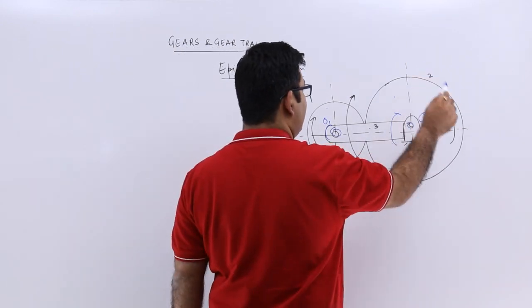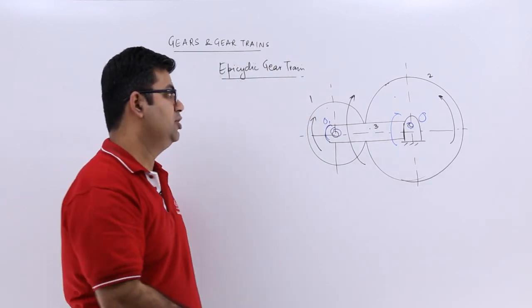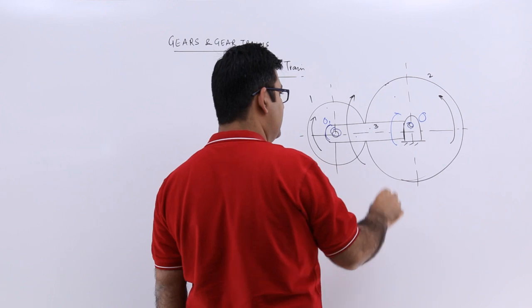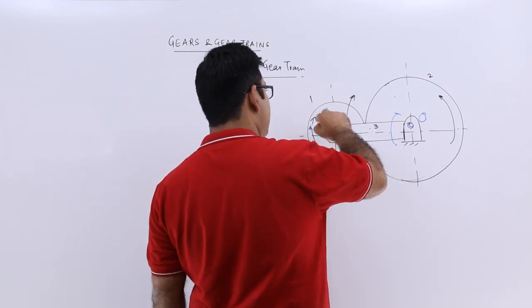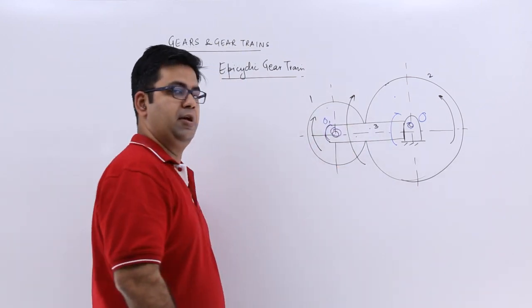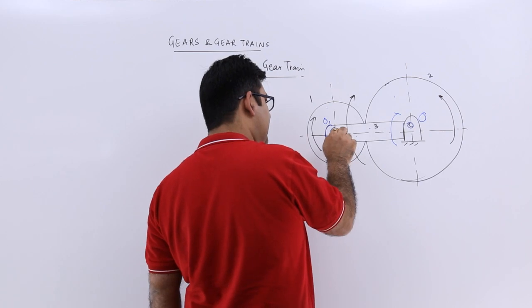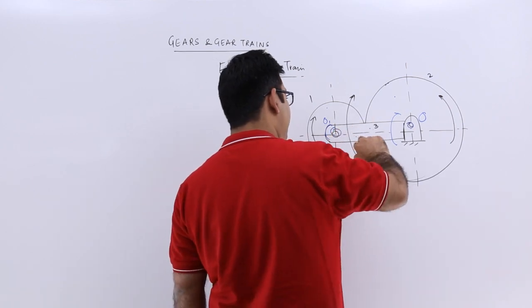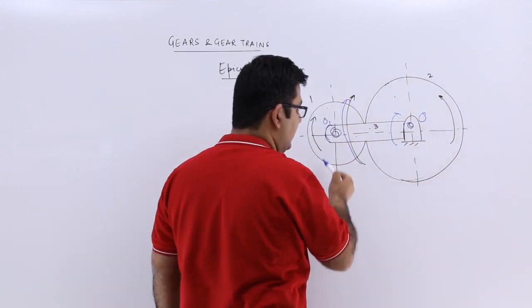Next, if I make gear 2 fixed, means gear 2 cannot rotate even. So I will have to give drive to this arm. So when I give drive to the arm, this entire gear 1 would start to rotate about this center O and will also rotate completely about this entire gear.